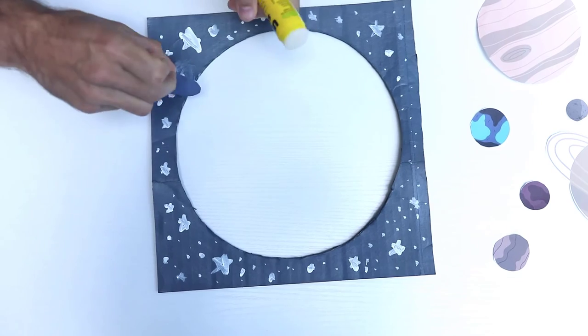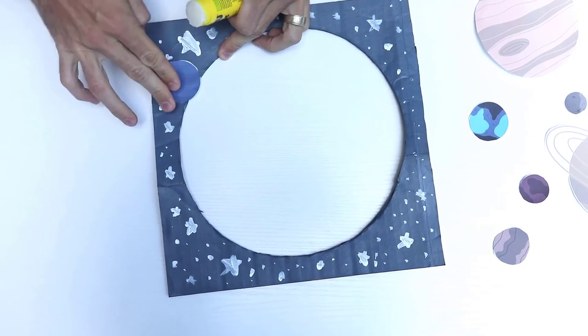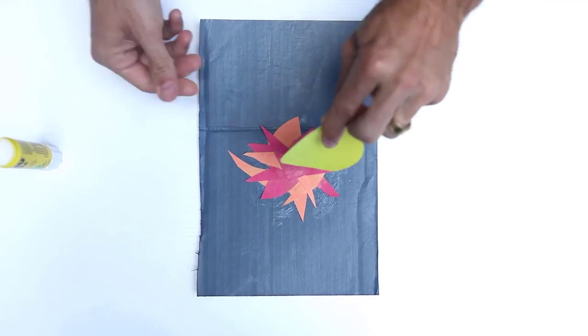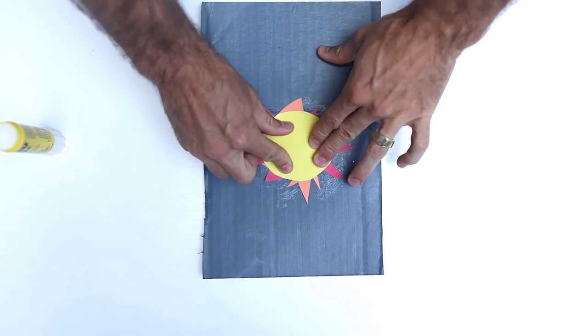Now we'll take a traditional glue stick and start gluing the planets however you'd like. Now we'll cut out pieces for the sun and assemble them with a traditional glue stick on the very bottom layer.